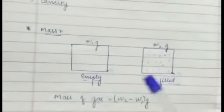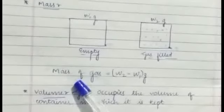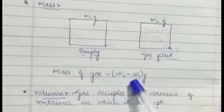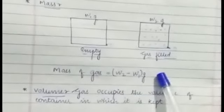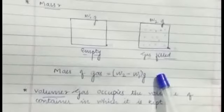We can measure the gas firstly by mass. Here we can see that the flask is empty, its weight was w1 gram. We have filled the gas, now its weight is w2 gram. So our gas weight is w2 minus w1 gram. So we can calculate the gas weight, which is the measurable property of gas.